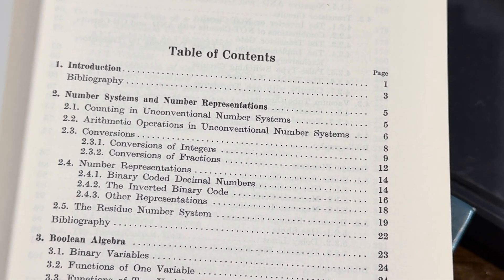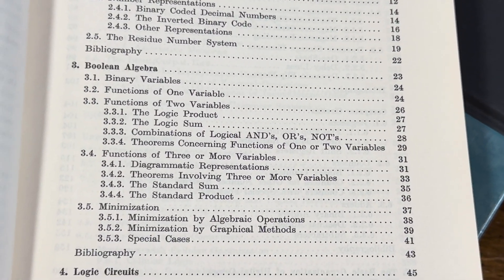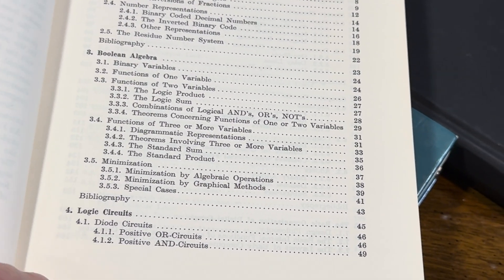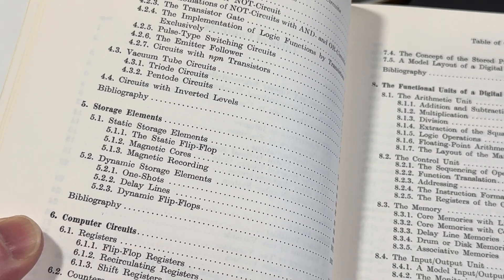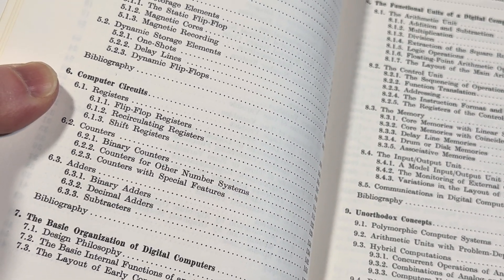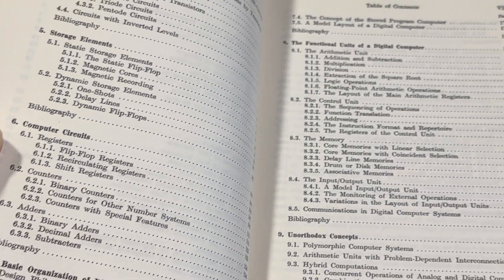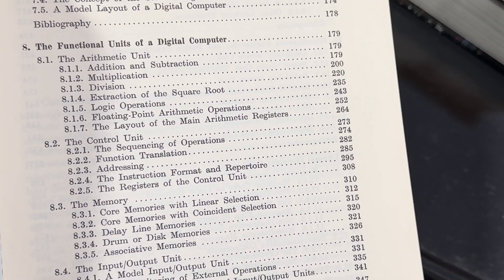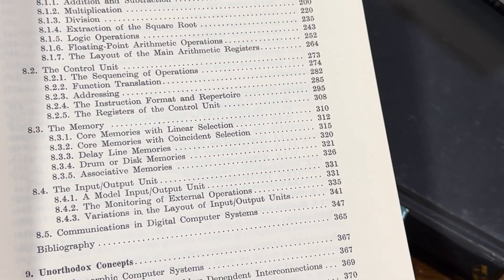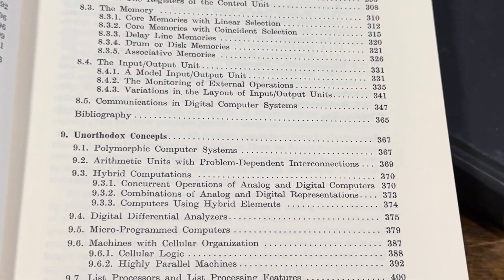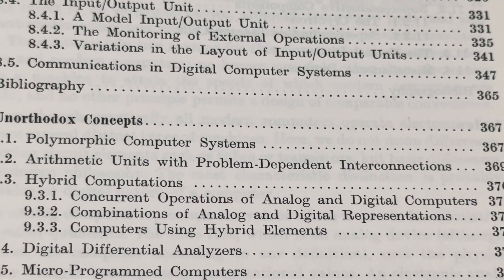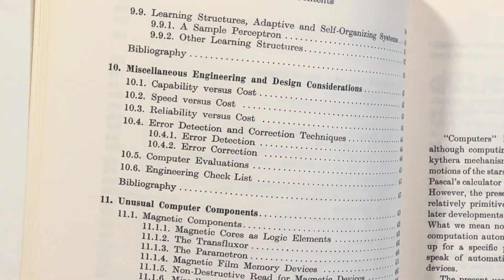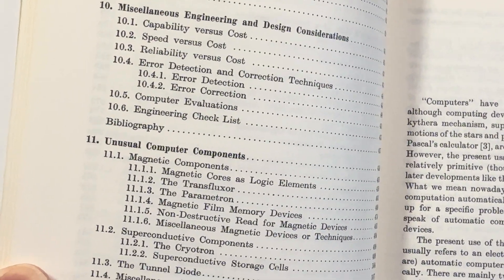Number systems and number representation. Boolean algebra — you do some of this stuff in discrete mathematics. Logic circuits. Storage elements. Computer circuits. If you know about this stuff, I'm curious — leave a comment if you have any experience with any of these topics. The functional units of a digital computer. Input-output unit. Unorthodox concepts. Polymorphic computer systems. Some stuff here that's pretty specific. Miscellaneous engineering and design considerations. Unusual computer components.